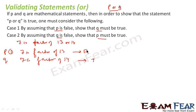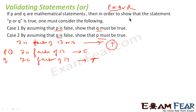The key rule here is: even if one component statement — p, q, r, or any — is true, then the whole compound OR statement is true. If all component statements are false, then only the compound statement is false.